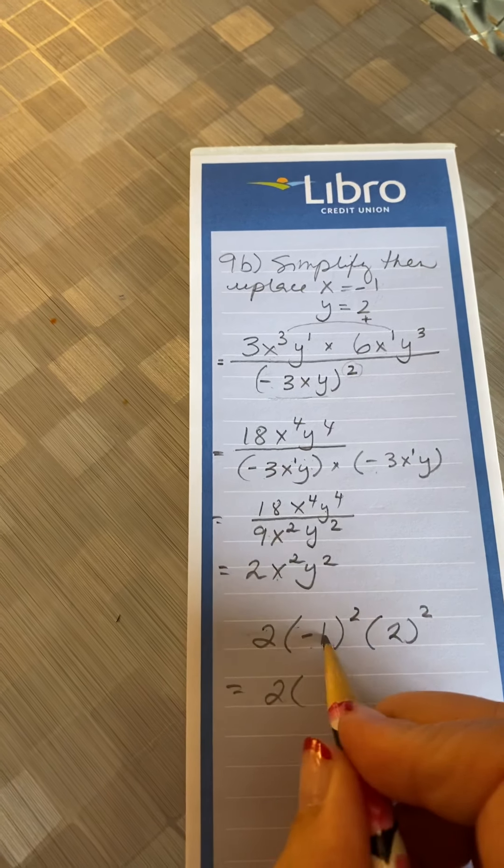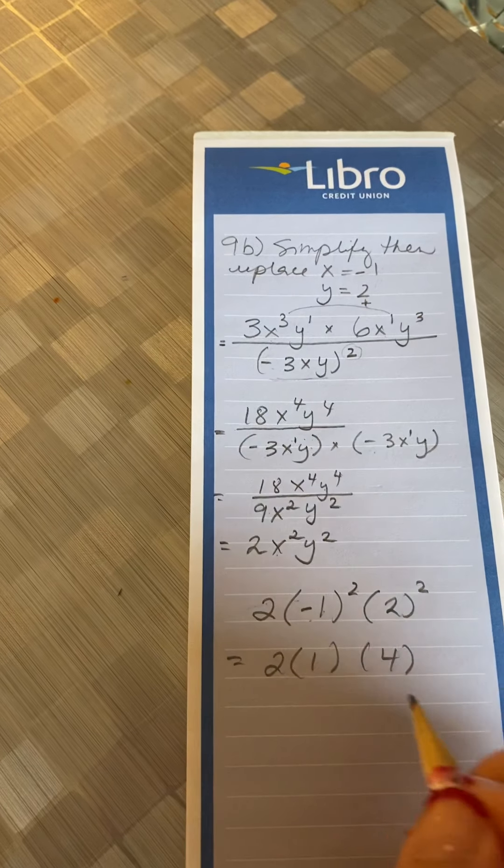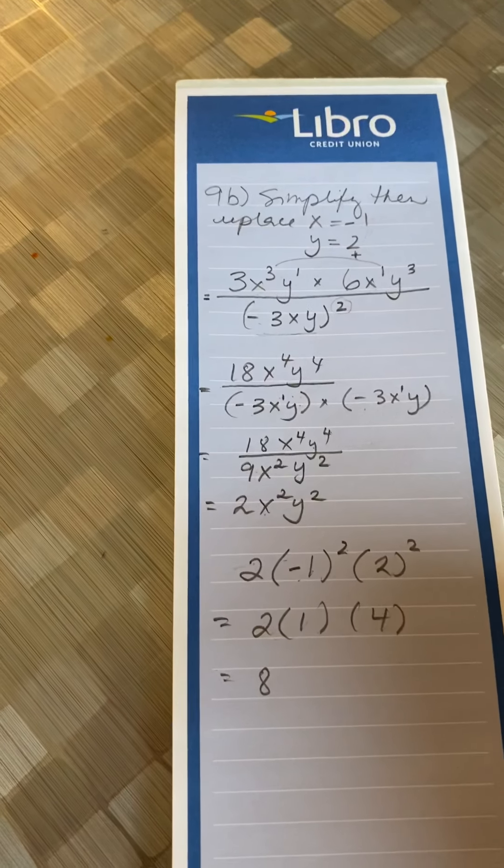What does that give me? So negative 1 squared is 1, and 2 squared is 4. So 2 times 1 times 4 is 8, so I got 8 as my answer.